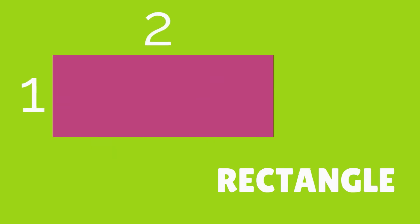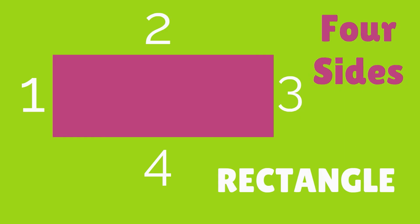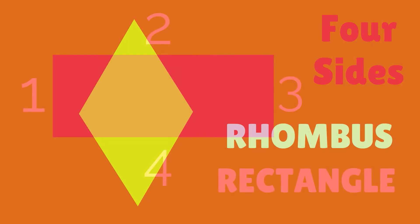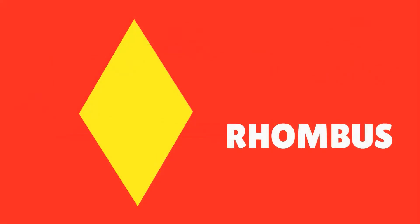How many sides does a rectangle have? Count with me: 1, 2, 3, 4. A rectangle has 4 sides. Now let's count the sides of a rhombus.